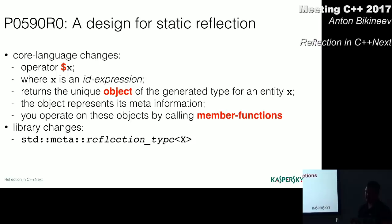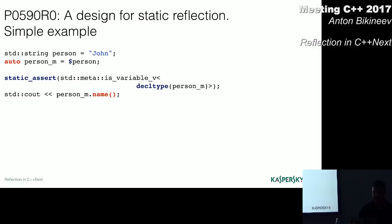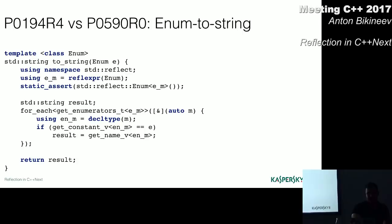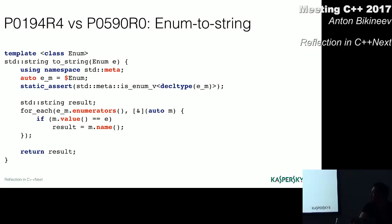Let's move on to the next proposal by Andrew Sutton and Herb Sutter. Called design for static reflection. And it is based on heterogeneous value syntax. It is very similar to the previous one, except the reflexpr keyword here is changed to the dollar sign. And it returns a value of a unique type instead of just a unique type. And now you use member function syntax instead of this meta function syntax.